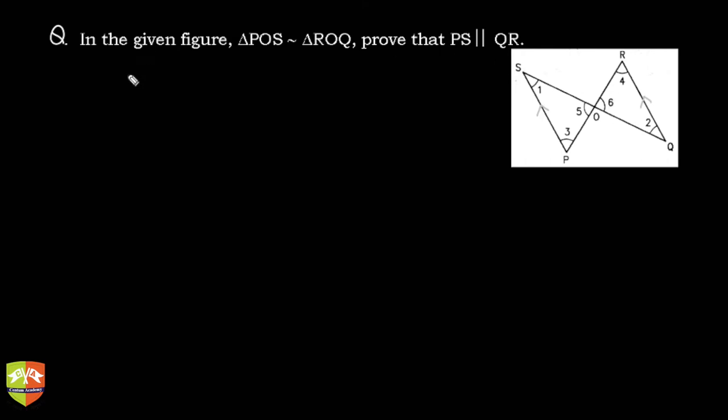This should be very simple. We have to prove that the lines are parallel, and we know that two lines are parallel when alternate interior angles are equal. If I prove that angle 1 is equal to angle 2, then my job is done, and that's exactly what is to be done here. Let's try to prove that the two angles are equal.